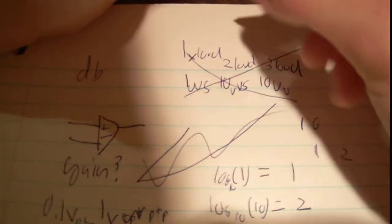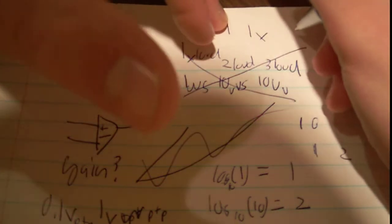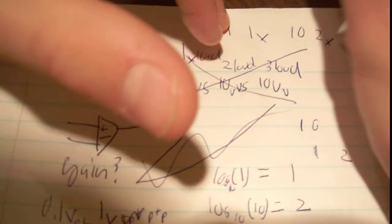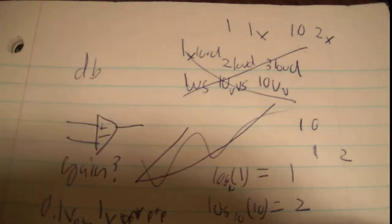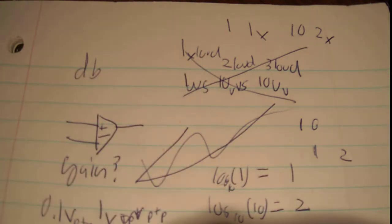So, if your gain on your op-amp is 1, you're going to get 1 times loud. If your gain is 10, it's going to be twice as loud. Keep that in mind. So, you might think that your 100 times gain op-amp is going to be super loud. No, it's going to be 3 times as loud as a 1 time gain op-amp. So, keep that in mind.